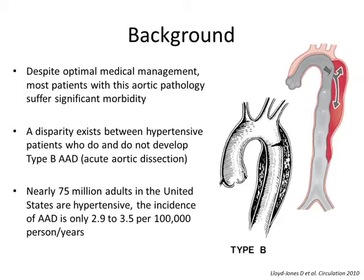Although many risk factors exist for AAD, hypertension continues to be the most significant, with over 75% of AAD patients suffering from hypertension. Yet a disparity exists between hypertensive patients who do and do not develop type B AAD. Nearly 75 million American adults are hypertensive, yet the incidence of AAD is extremely small in comparison, suggesting that using screening alone for hypertension to prevent AAD may be inappropriate.